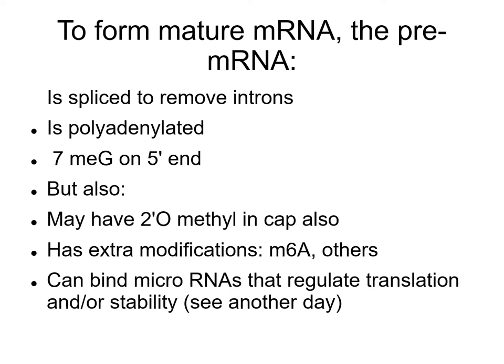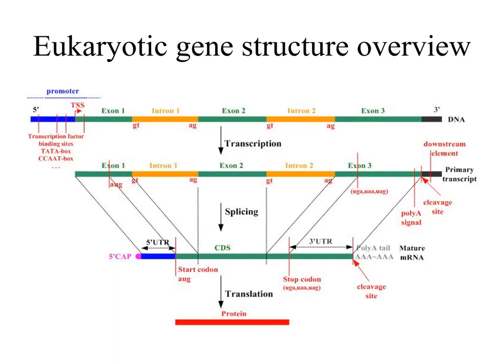To form the mature mRNA, we splice it to remove the introns, polyadenylate it, and put an unusual 7-methylguanosine backwards onto the 5-prime end. There are also other modifications which can occur in the mRNA. In the region surrounding the methylated cap, we can have 2-prime O-methyl and other additional mRNA modifications, the most prevalent of which is m6-methyladenosine.